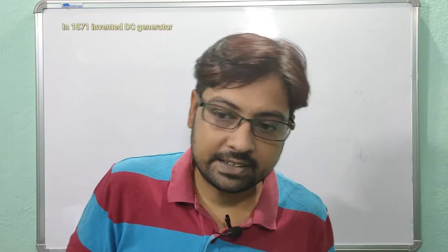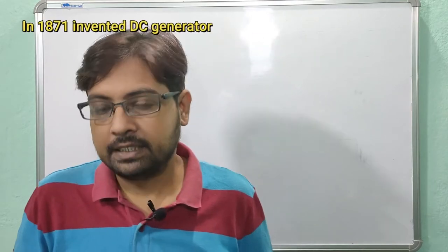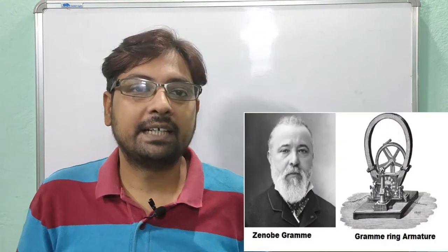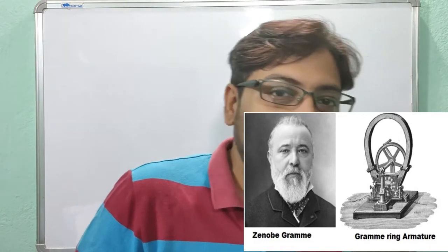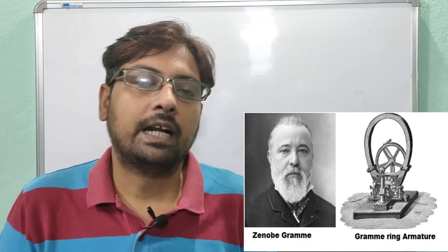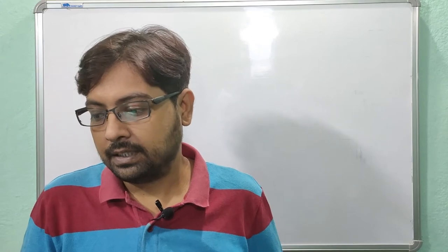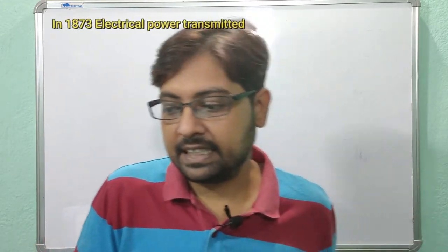In the year 1871, the scientist named Gramme practically designed a DC generator, which is known as the Gramme generator or Gramme armature.